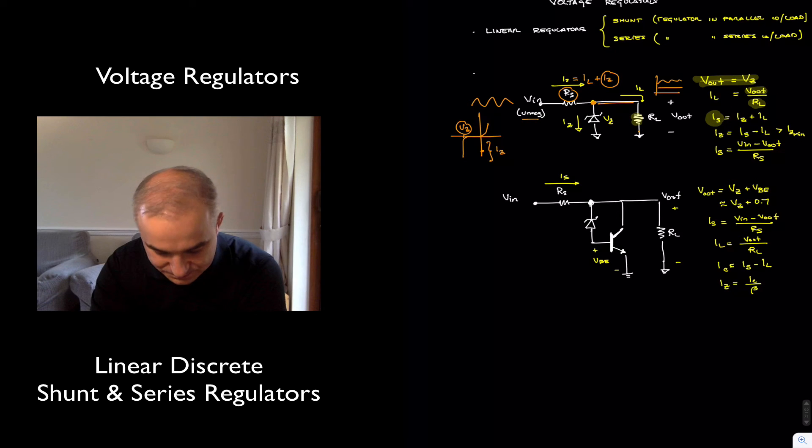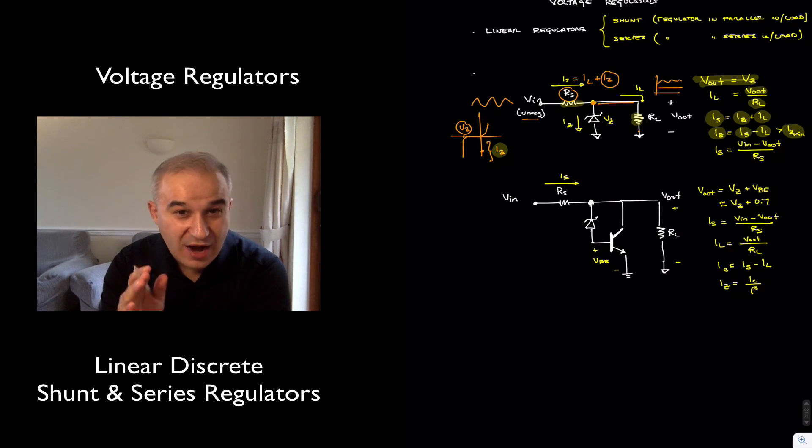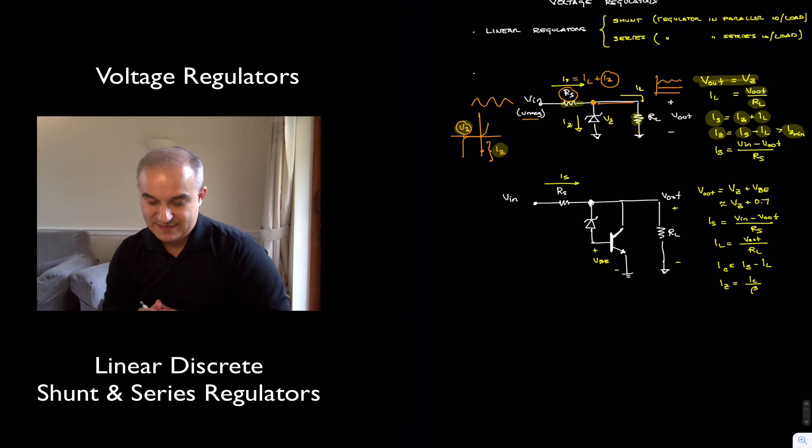As I mentioned, the IS, the biasing current that we have here, needs to be equal to the Zener current plus the load current. Or you can say the Zener current is going to be IS minus the load current and should be higher than the reverse current in the Zener in order for it to achieve the Zener breakdown.